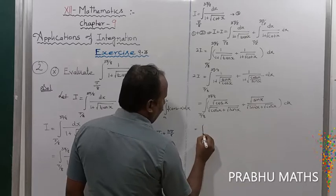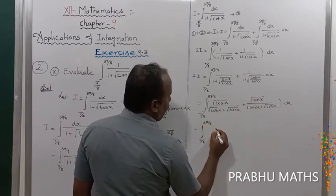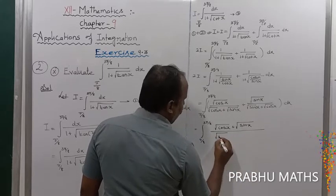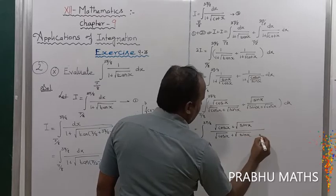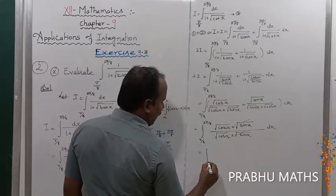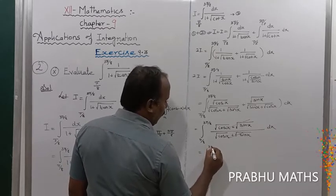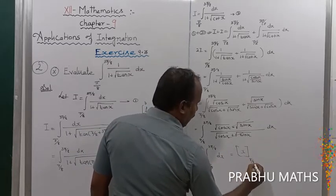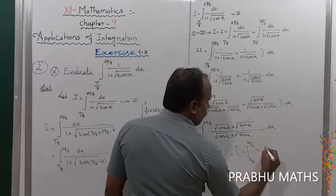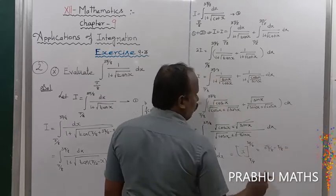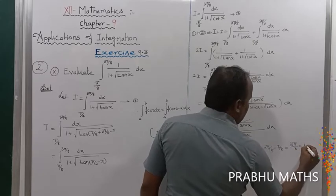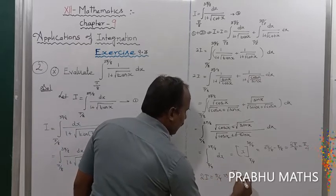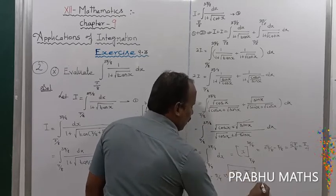The numerators add up: root of cos x plus root of sin x, all divided by root of cos x plus root of sin x. The numerator and denominator cancel, giving 2I equals integral from π/8 to 3π/8 of dx. Integrating gives x evaluated from π/8 to 3π/8, which equals 3π/8 minus π/8 equals 2π/8 equals π/4. So 2I equals π/4, which implies I equals π/8.